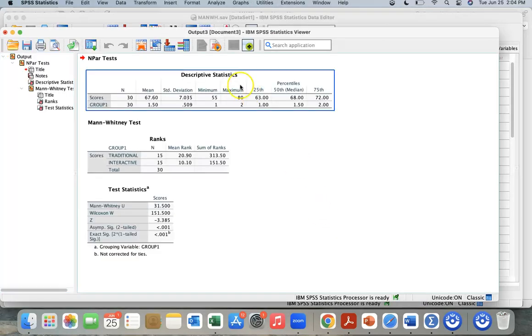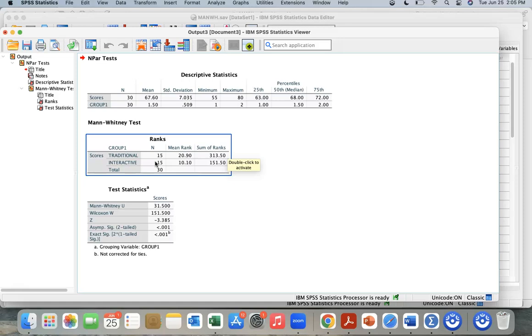Alright, we have our descriptive information here with the scores, we have means, median, standard deviation, and then we have it broken down to the 25th, 50th, and 75th percentile. We can go to our ranks. We have the number 15 for each one equals 30, and you can see traditional is a lot higher than interactive. We can see that's 20, and that's 10, so that's higher.